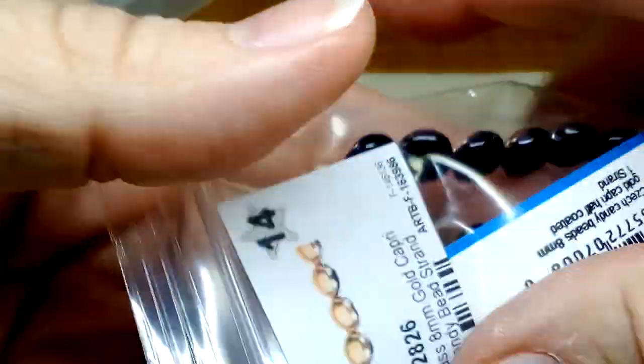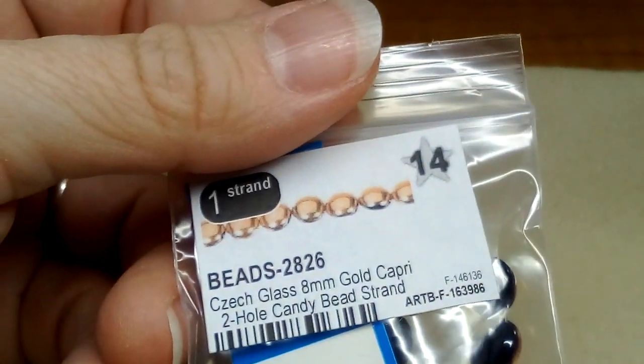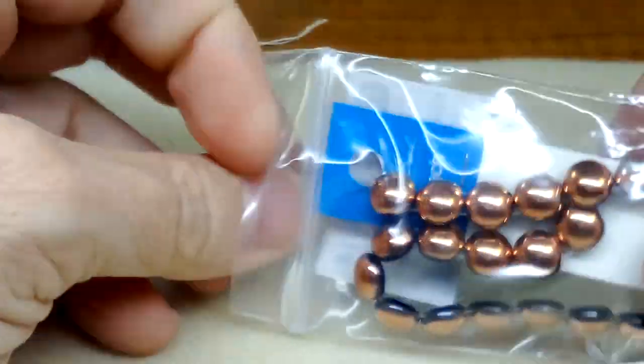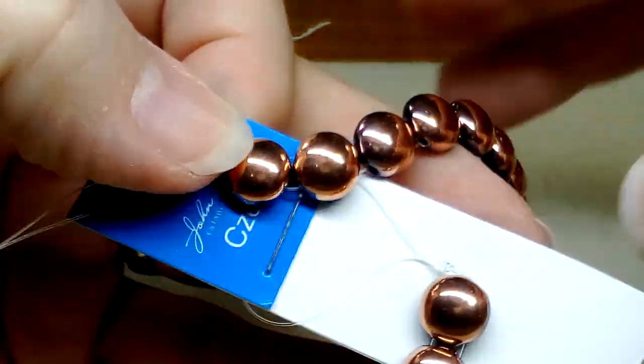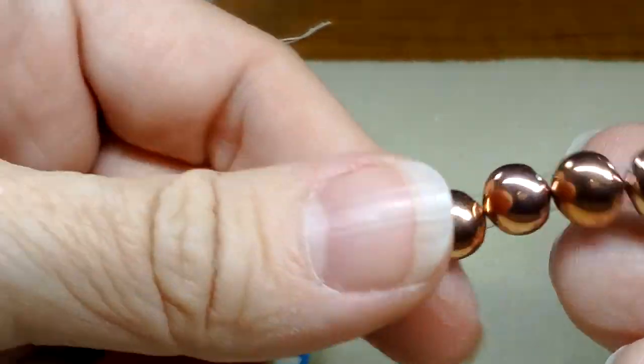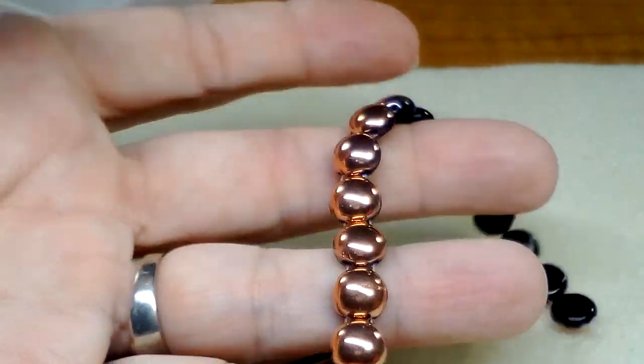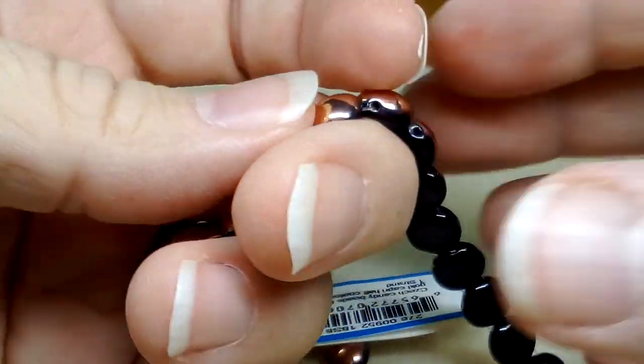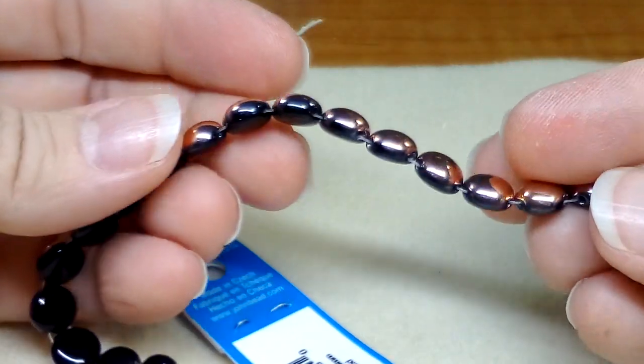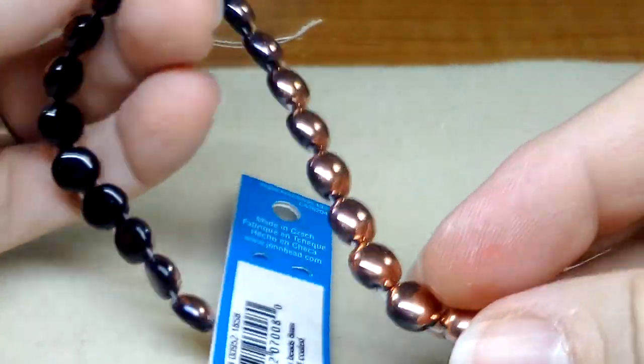Last but not least, we have candy bead strand, Capri gold, gold capri. Look at these guys. Those are beautiful. That's what they look like on the other side. There we go. Let's see if I can show you what we've got going on here. There's the craziness, and that's not all of it, there's some in the corner there.